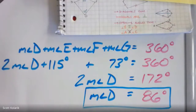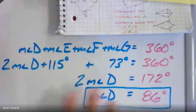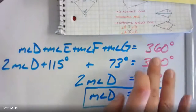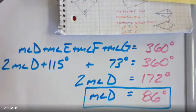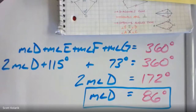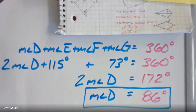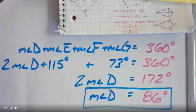Be prepared to see variations with variables in the problem — the general format is the same: add the angles together to equal the interior sum of 360 degrees, then use combination of like terms and isolating the variable. That concludes our discussion of Section 5 on properties of kites.